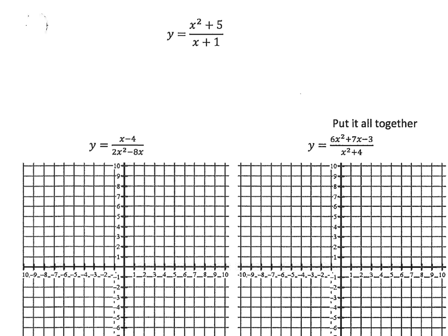We found that we had a hole at (4, 1/8). We found we had a vertical asymptote at x equals 0. We found we had a horizontal asymptote at y equals 0. We did not have any x-intercepts, and our y-intercept was none.